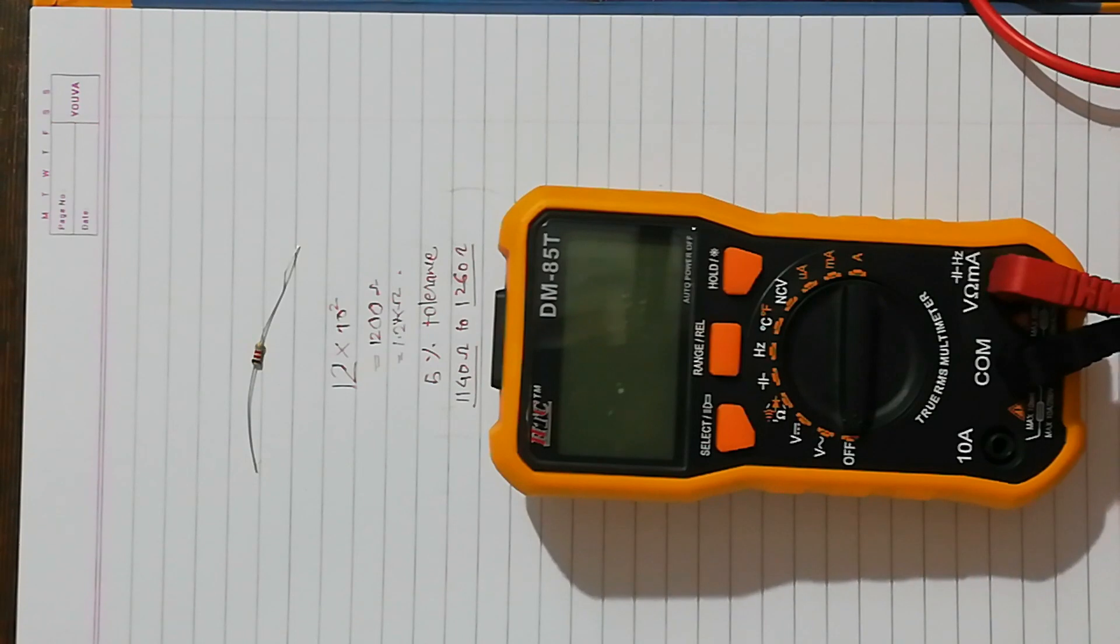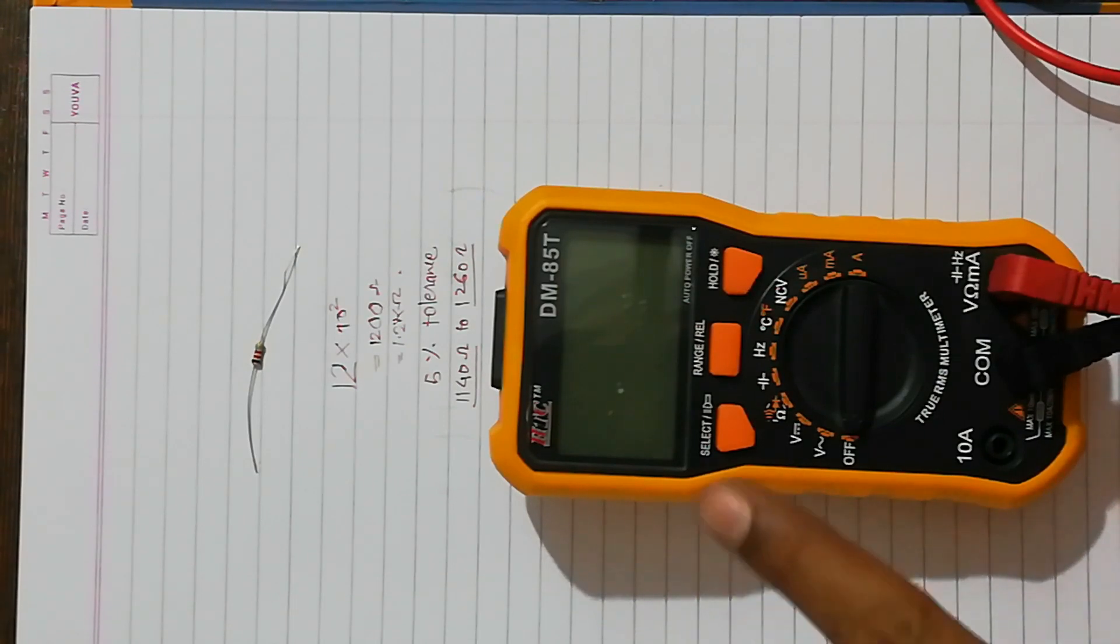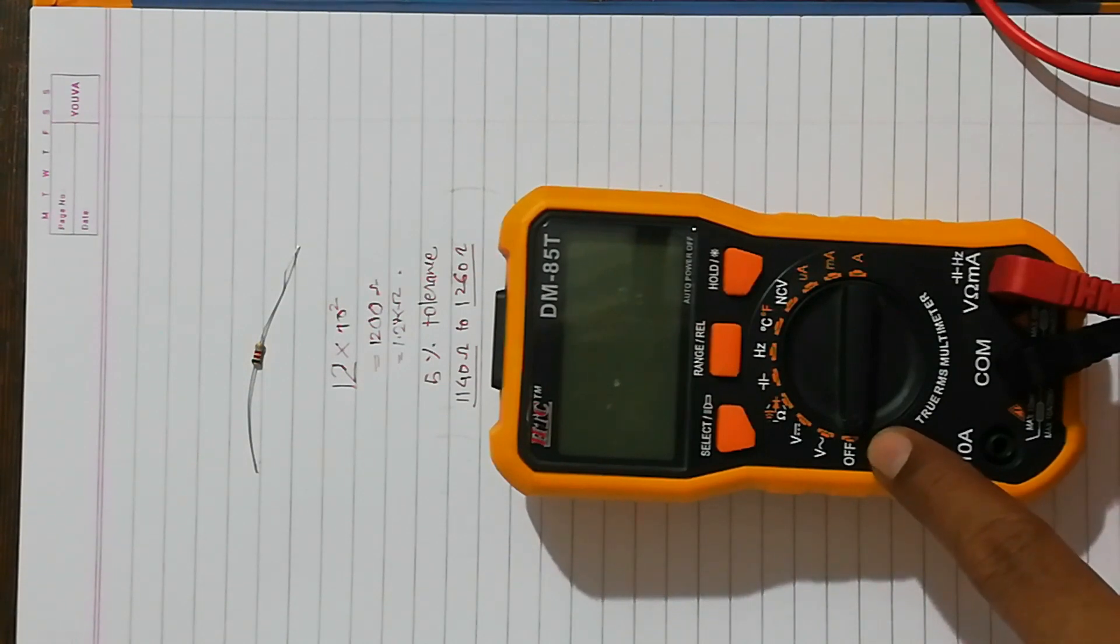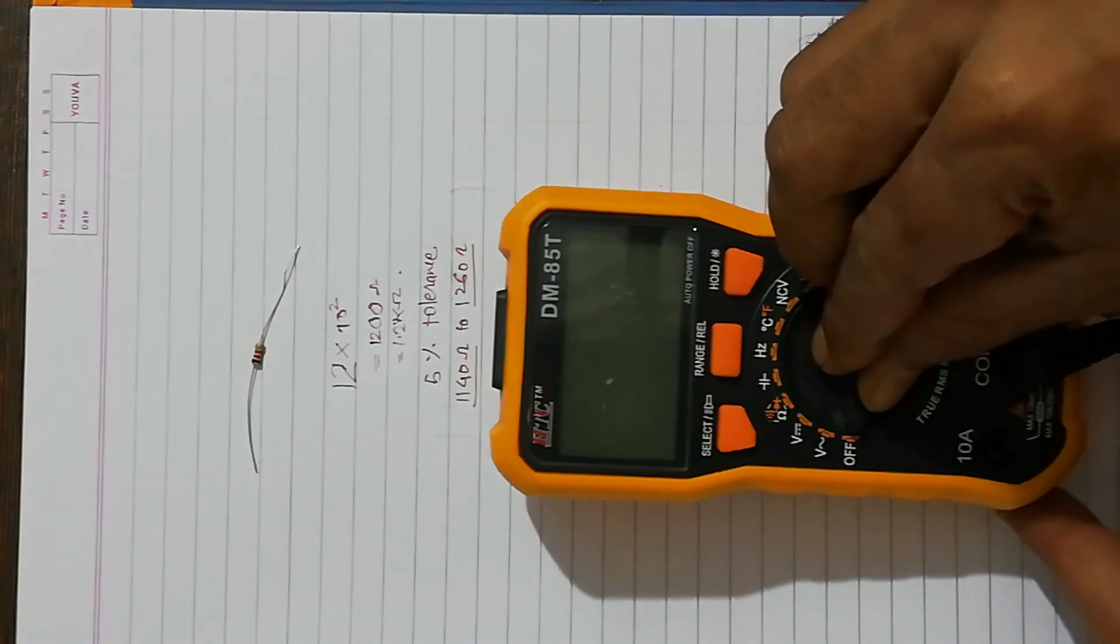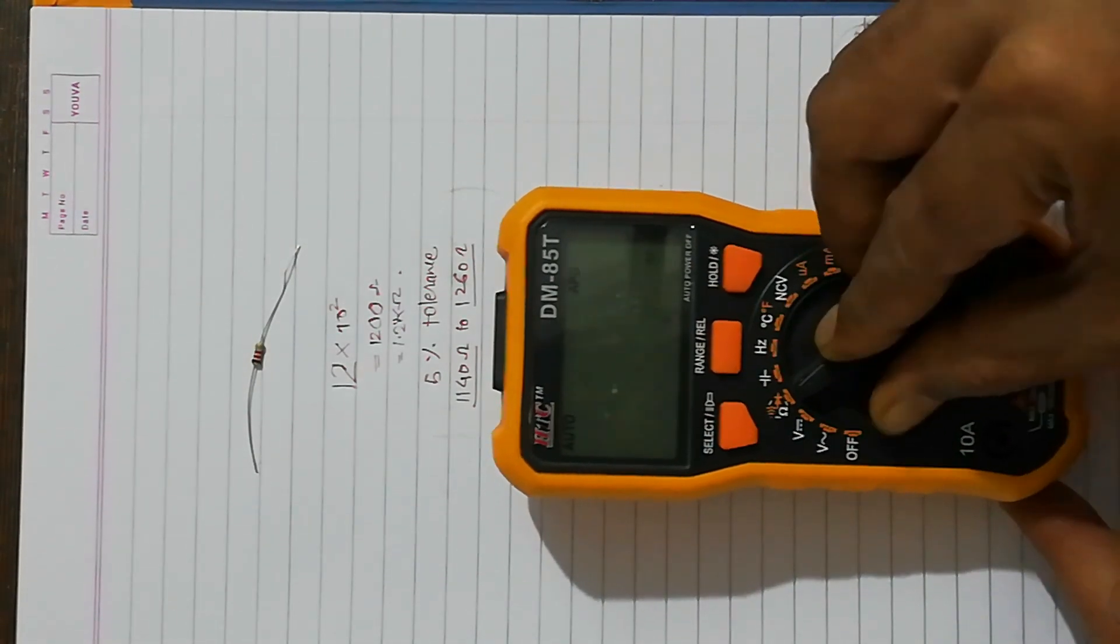Now we have calculated the value of this resistor from the color code. So how to verify the theoretical value that we calculated for this resistor is actually 1200 ohms or 1.2 kilo-ohms? For that you can see we can use the digital multimeter. So currently it is switched off. I want to measure the resistance, so I have a setting here for ohms. So I will turn it on and keep it to the setting ohms.